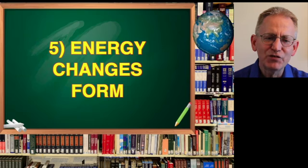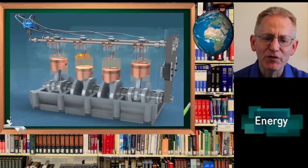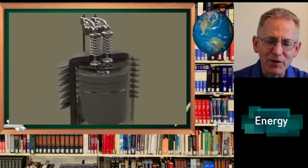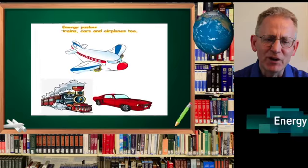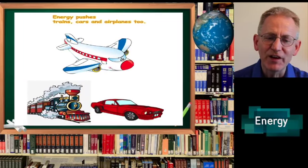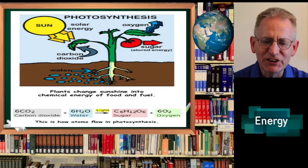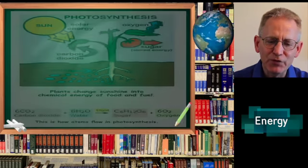Energy changes form. Chemical gas burns to make cars go. It's the fuel, the gas, that burns to make the engines move. Energy pushes trains, cars, and airplanes too. There's energy in life. Plants change sunshine into chemical energy of food and fuel.